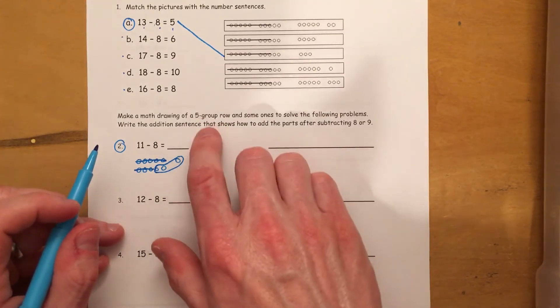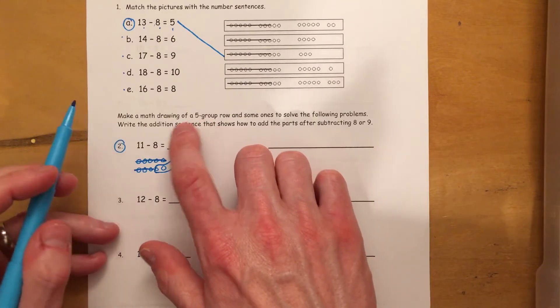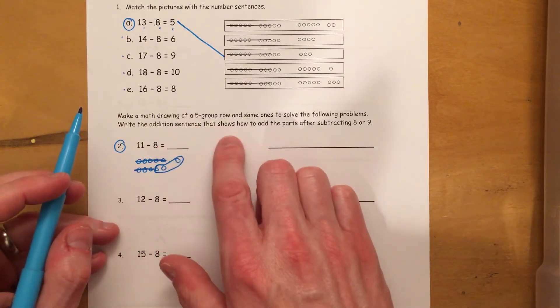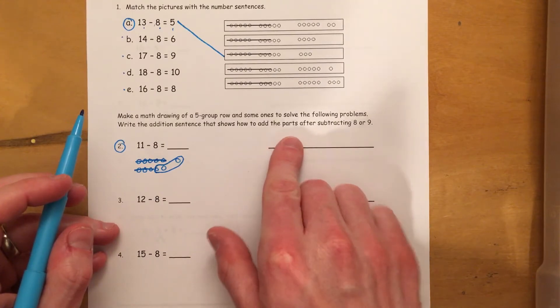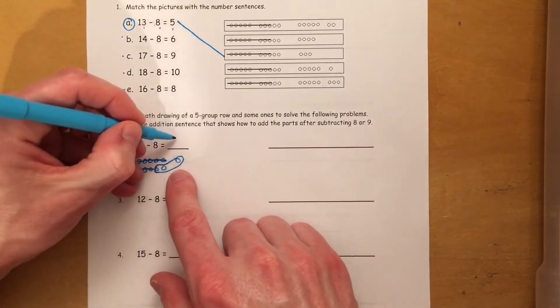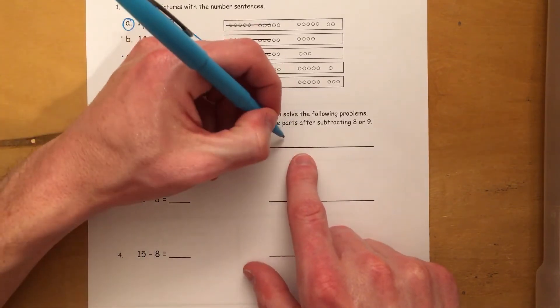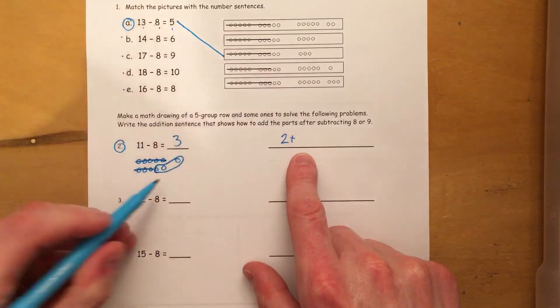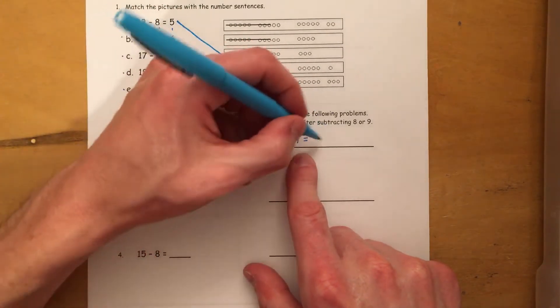So let's take a look at the instructions again. It says that we need to draw. So we got that. We need to write the addition sentence that shows how to add the parts after subtracting 8 or 9. So I know that the answer is going to be 3, but I need to come over here and write down the sentence. So I have 2 plus 1 equals 3.